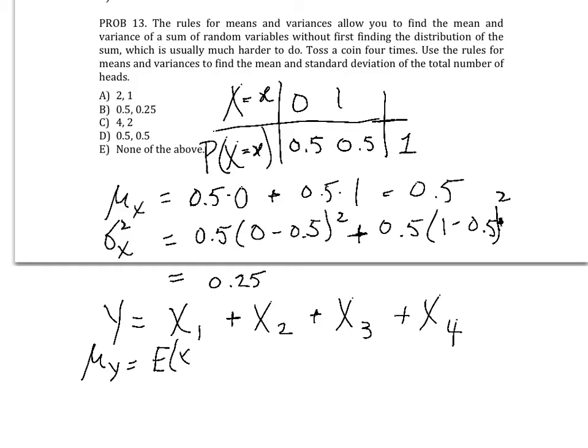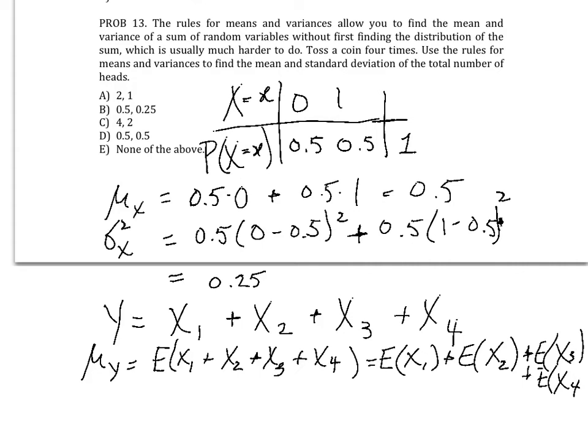So to calculate the mean of y, using the rules that we know, the expected value of x1, plus x2, plus x3, plus x4, is going to be the expected value of x1, plus the expected value of x2, plus x3, plus x4. The mean of the sums is equal to the sum of the means. Each one is going to be 0.5, and they're all the same. And so the answer is 4 times 0.5, or 2. So far, our mean is 2. So the possible answers are A and E.